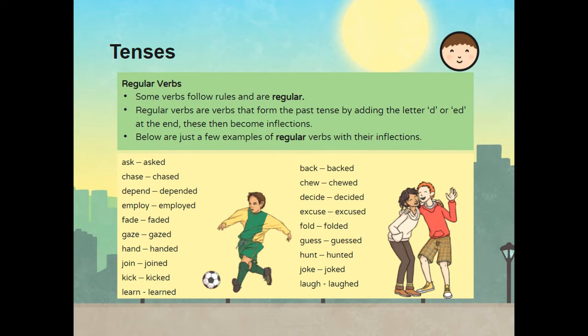Below are just a few examples of regular verbs with their inflections. Ask becomes asked. Chase becomes chased. Depend becomes depended. Employ becomes employed. Fade becomes faded. Gaze becomes gazed. Hand becomes handed. Join becomes joined. Kick becomes kicked. Learn becomes learned. Back becomes backed. Chew becomes chewed. Decide becomes decided. Excuse becomes excused. Fold becomes folded. Guess becomes guessed. Hunt becomes hunted. Joke becomes joked. And laugh becomes laughed.